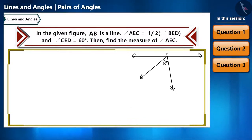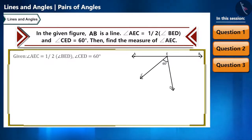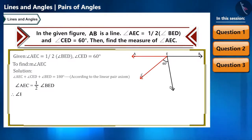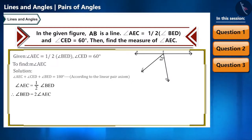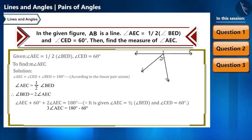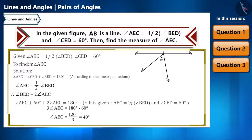This is a straightforward question: angle AEC equals one-half of angle BED, and angle CED equals 60 degrees. We need to find angle AEC. We know angle AEC plus angle CED plus angle BED equals 180 degrees. Substituting, we write 2 times angle AEC for angle BED, giving: angle AEC plus 60 plus 2 angle AEC equals 180. So 3 angle AEC equals 120, and angle AEC equals 40 degrees.